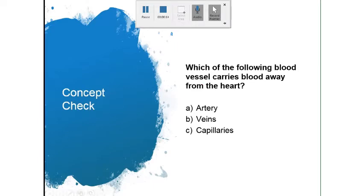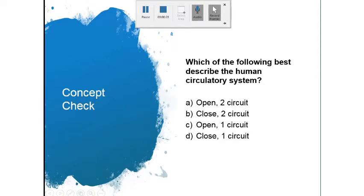Which of the following blood vessels carry blood away from the heart? The answer would be artery — 'A' for away. Which of the following best describes the human cardio-circulatory system? The answer would be closed — two circuit.